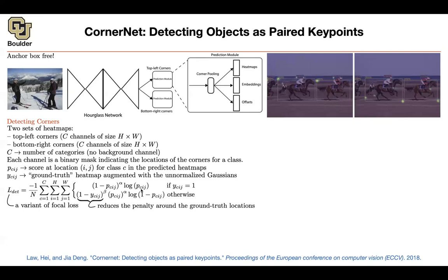With focal loss, you want to down-weight the easy cases — background pixels or cases where the model is already confident there is no corner. This handles class imbalance. Near the ground truth locations, you reduce the penalty: when the predicted value y_cij is close to one, you are near a corner, so don't down-weight it. This Gaussian smoothing and reduced penalty helps detect corners better.